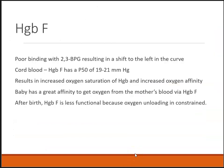Hemoglobin F has poor binding with BPG, resulting in a shift to the left of the curve. Less pressure is needed to get more oxygen saturation of the cells. A baby in utero has a greater affinity need to get oxygen from the mother's blood — that's why a woman gets tired more quickly. Once the baby is born, hemoglobin F drops off because oxygen unloading becomes more constrained, and after birth hemoglobin F is no longer as needed.